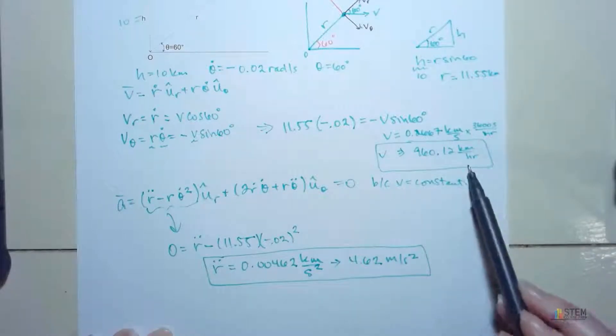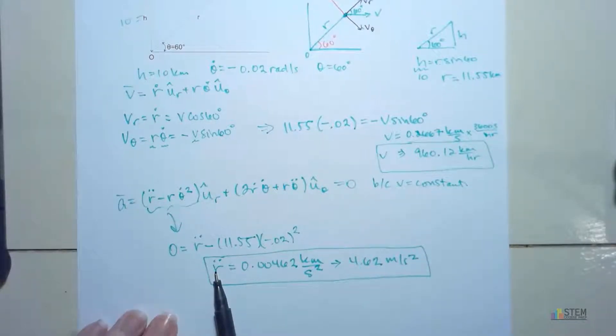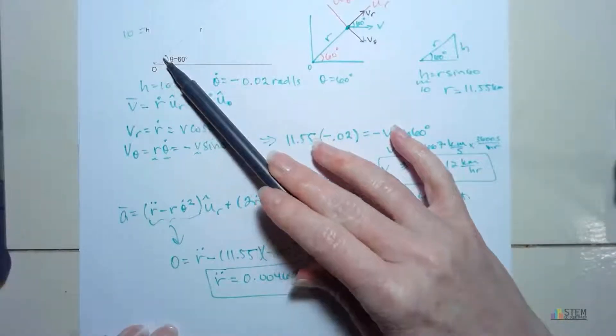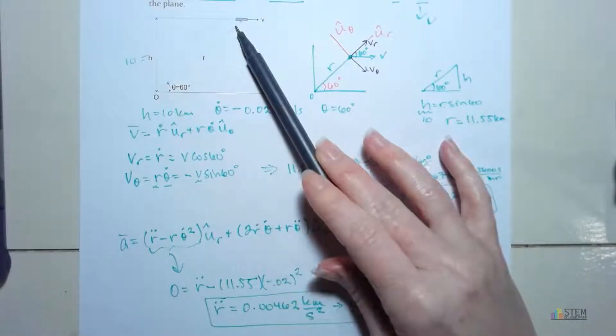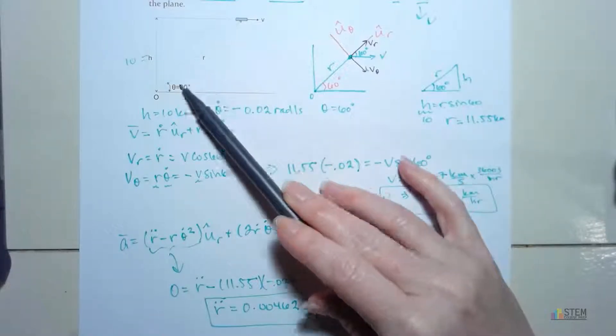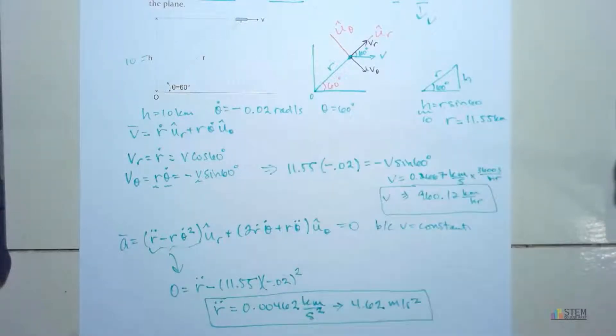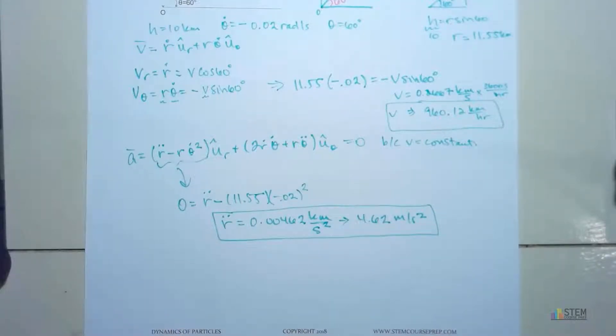So velocities are usually kilometers per hour. Accelerations, like what we have here, usually meters per second squared. Now let's think about what this is. So basically what this is, if you think about what R dot is, R dot is basically the rate of change of this radial line. So the R double dot then would be the acceleration of this line. So it's just the second derivative of this radial distance. So that's what your R double dot is.